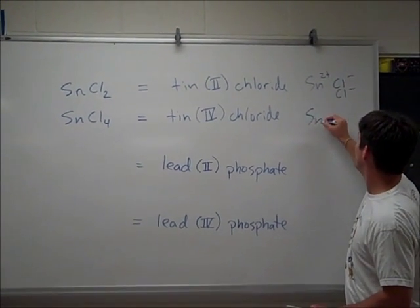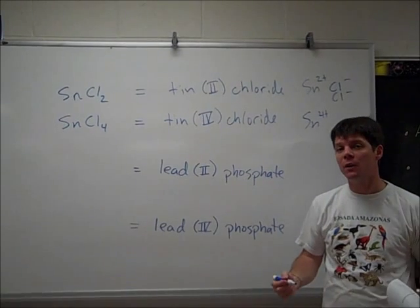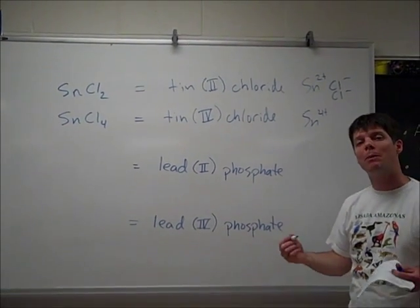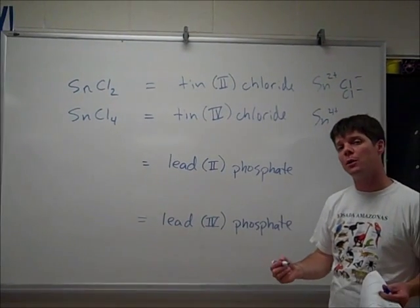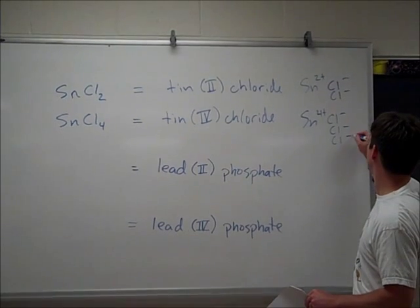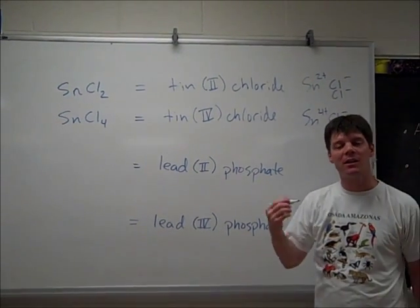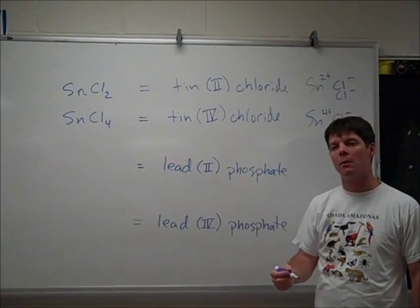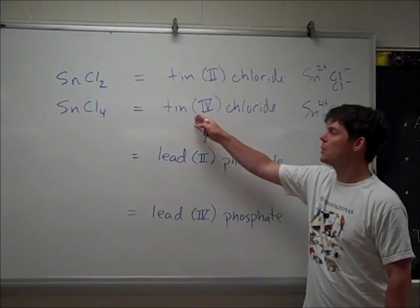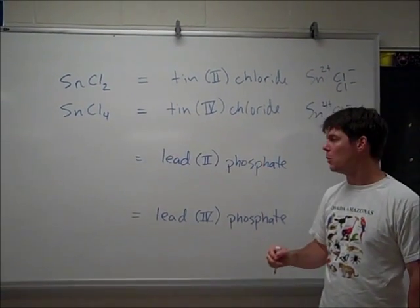Tin(IV) chloride is a different version. This is when tin forms a plus four charge. Now it needs to be paired with four chloride ions to produce an electrically neutral compound. So that's again where the name Tin(IV) chloride is coming from. Again, the four tells me the charge of the metal ion which is preceding the Roman numeral.